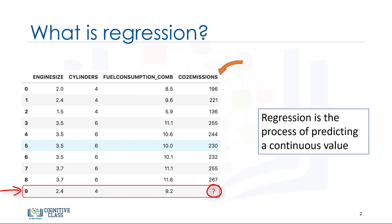We can use regression methods to predict a continuous value such as CO2 emission using some other variables. Indeed, regression is the process of predicting a continuous value.